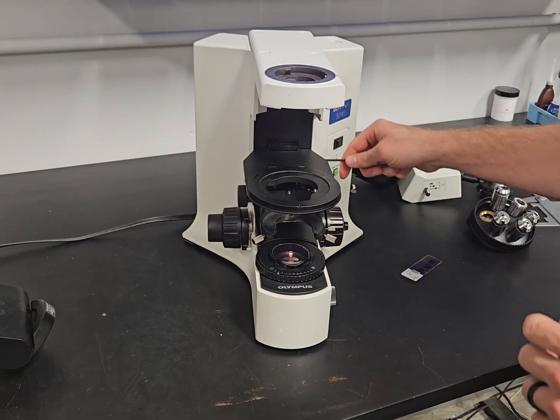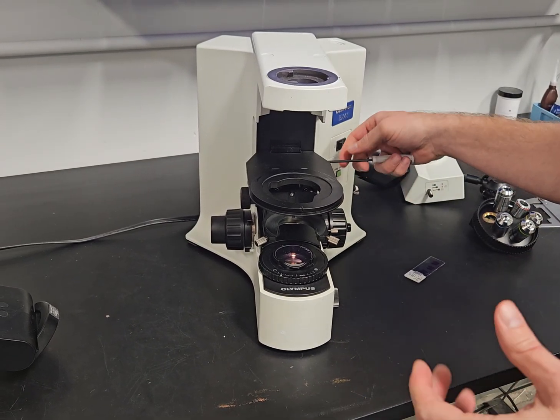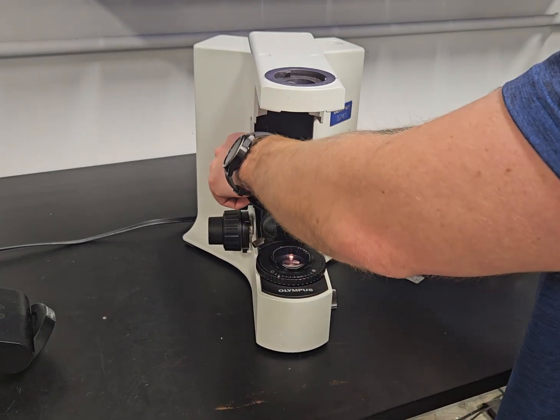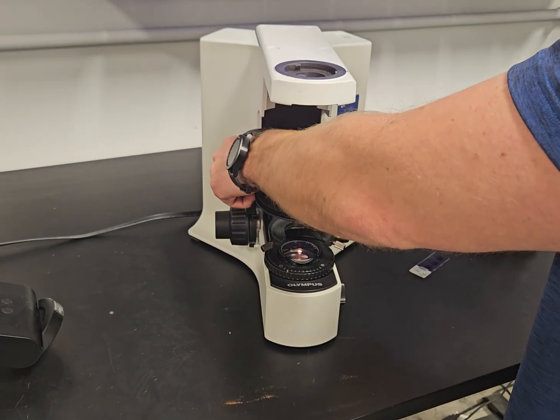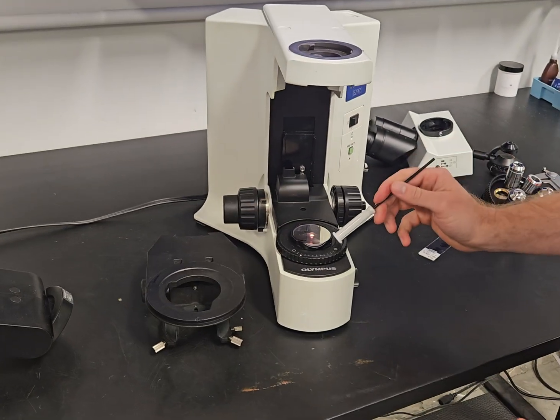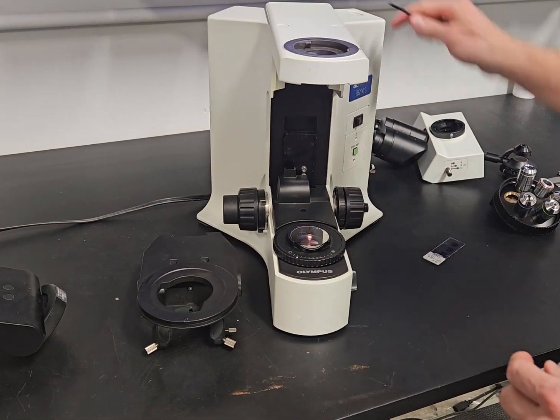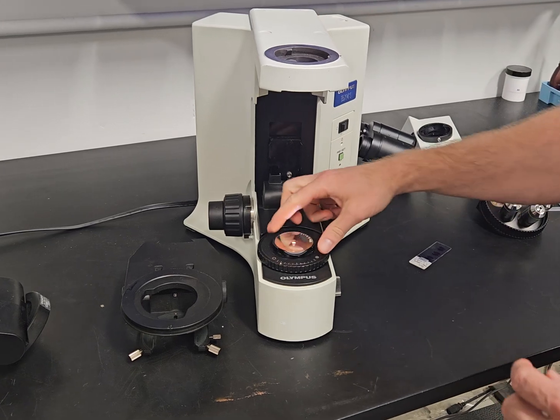If you don't have that, you'll get a vignetting or a shadow around the edge of the 2X. This is your sub-stage condenser bracket. When you have this off, you have a daylight blue filter on here, a didinium filter because this scope's halogen.